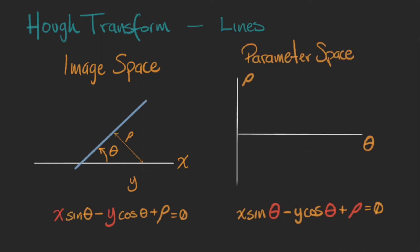In the parameter space, what we will get is a sinusoidal, and when we plot the second point, we will get another one. The intersection of these two are the lines in the image space.